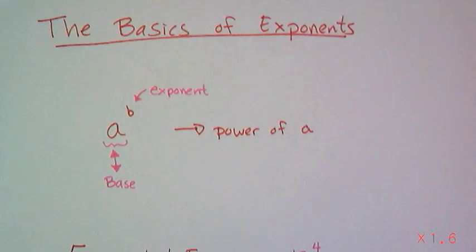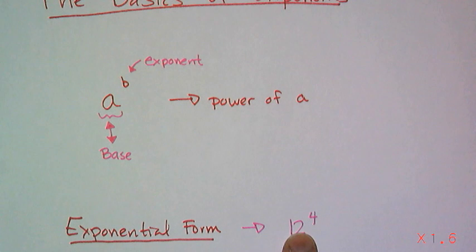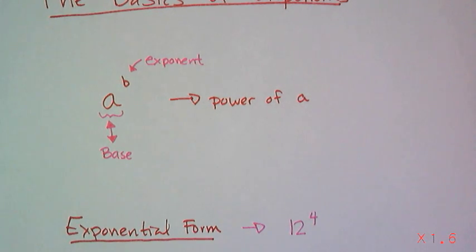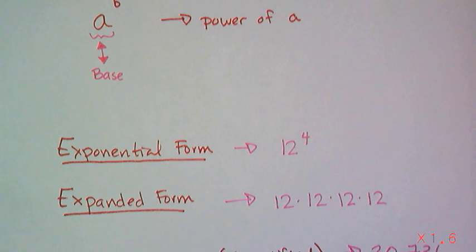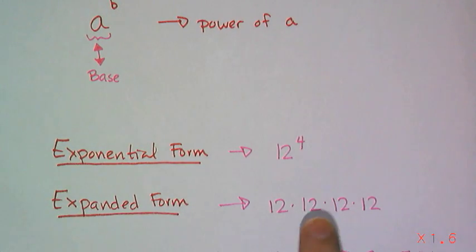Now there are three ways to look at exponents and how to write them. First off, we have something called exponential form, which is when you actually write the exponent as a superscript. And so this is a compact way of writing this next thing, which is the expanded form. So the expanded form of 12 to the 4th is when you actually write it out by the definition of exponents as 12 times 12 times 12 times 12.